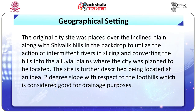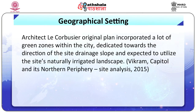The site is further described as being located at an ideal 2-degree slope with respect to the foothills, which is considered good for drainage purposes. Architect Le Corbusier's original plan incorporated a lot of green zones within the city dedicated towards the direction of the site drainage slope, expected to utilize the site's natural irrigated landscape.